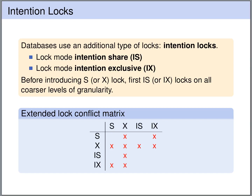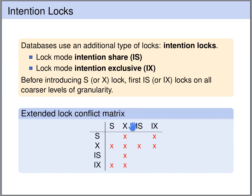We now have four types of locks: shared, exclusive, intention shared, and intention exclusive — and together with these we have an extended conflict matrix. Shared locks do not conflict with shared locks, but exclusive locks conflict with both shared and exclusive locks. Shared locks also do not conflict with intention shared locks. If one transaction has a shared lock on some object, it's fine if another transaction introduces an intention shared lock — it just means that transaction wants a shared lock on some finer level of granularity.